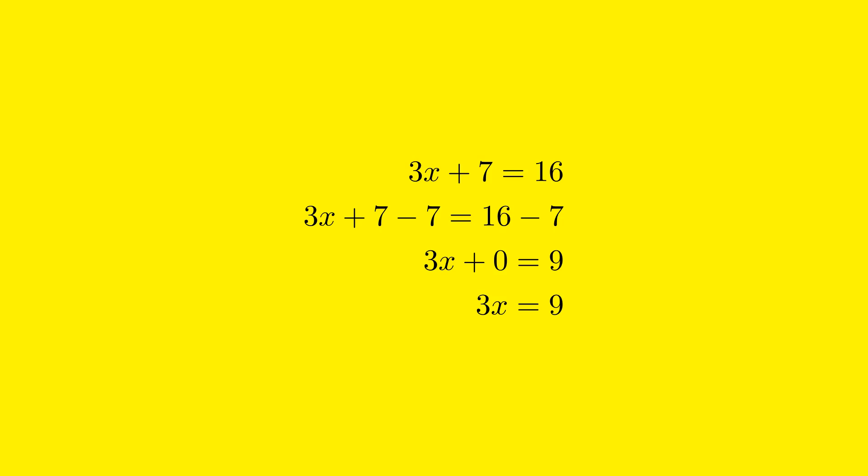To start isolating the x, we need to get rid of the 7 on the left side. To do this, we will subtract 7 from both sides of the equation. Why subtract? Because subtraction is the opposite operation of addition, and this will help us remove the 7 from the left side. So subtracting 7 from the left side, we have 3x plus 7 minus 7. Whatever we do to one side of the equation, we must also do to the other side in order to keep the equation balanced.